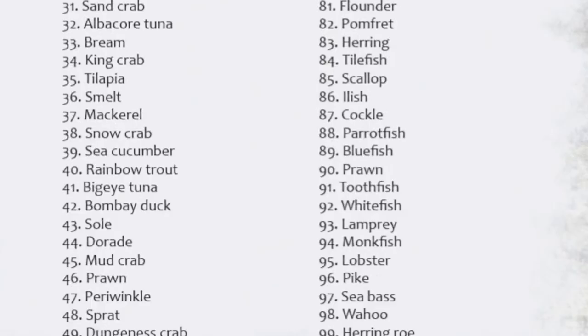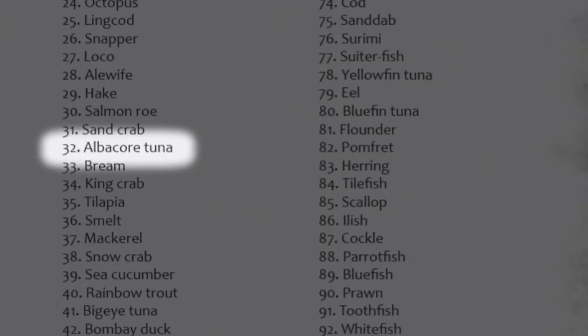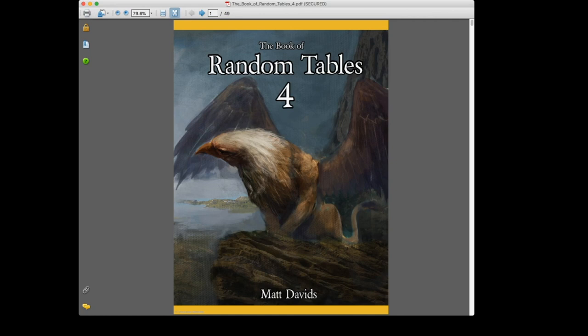The food and drink table is great for when players go into an inn to celebrate and ask what's on the menu. Instead of just bread and venison — the ubiquitous fantasy staple — you go to this table. Roll a 96 and on the menu is pike roast, pike garnished with lemons. Or roll 32 and it's albacore tuna — suddenly it's the sushi place. There's herring, tilefish, scallop, sea cucumber, rainbow trout. It gives you detail that helps flesh out the world and make it feel alive, vibrant, and breathing.